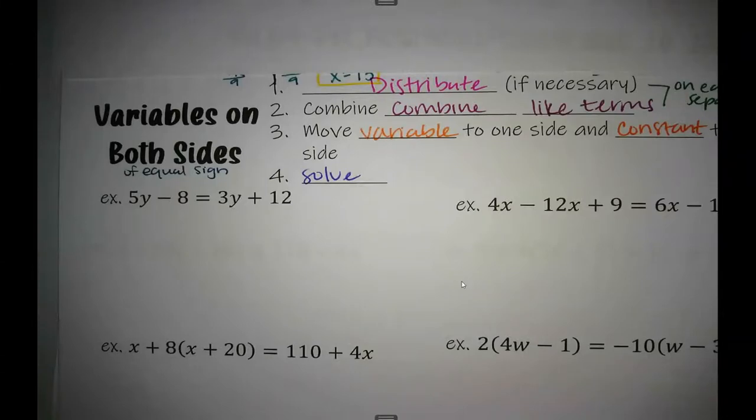All right, let's look at some examples where we have variables on both sides. So we got 5y minus 8 equals 3y plus 12. We want to get y by itself, but right now it's all over the place and lots of things are happening to it. So let's go step by step.